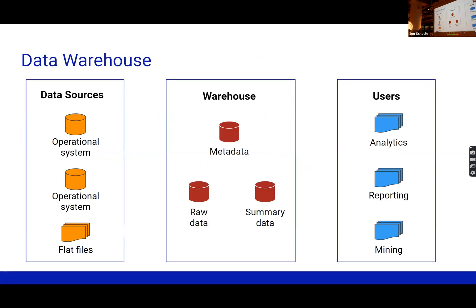The components that feed into the data warehouse may come from operational systems like a CRM system or an accounting system, they may come from an API — a third-party service that we subscribe to, to bring in market data — or it may come in the form of flat files. Within the data warehouse, we want the data itself, but we also want some understanding of its structure and its characteristics. That's really what metadata is.